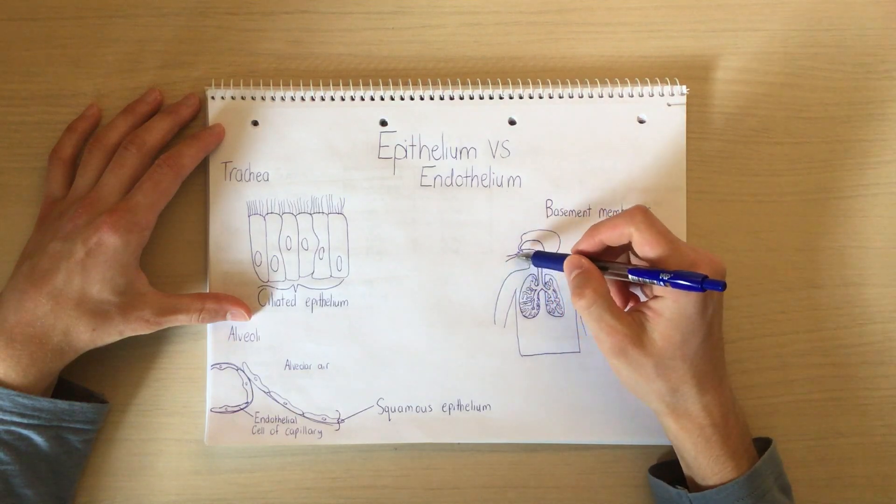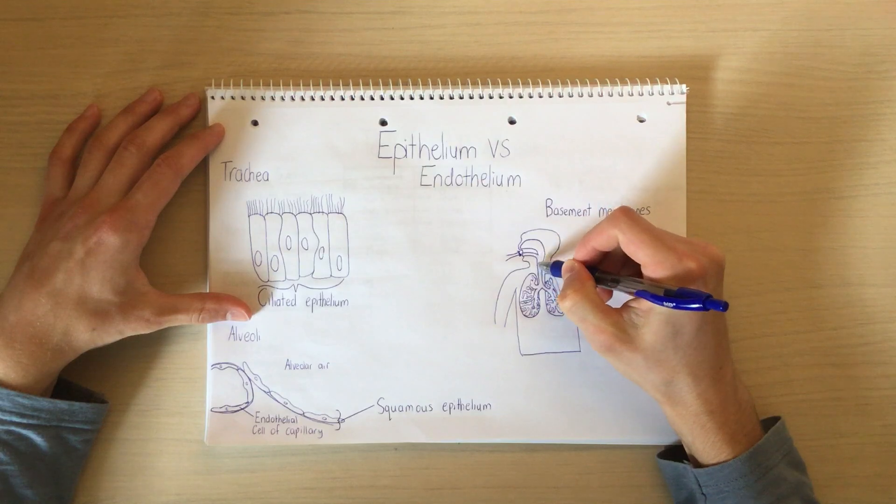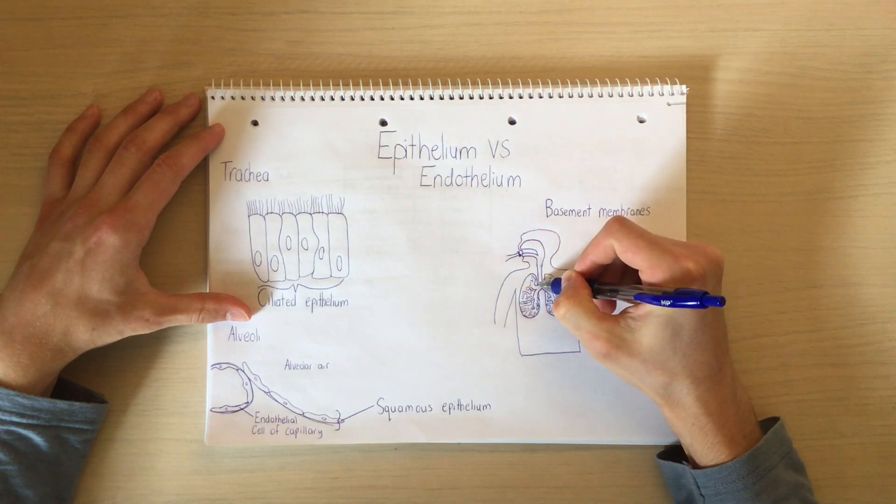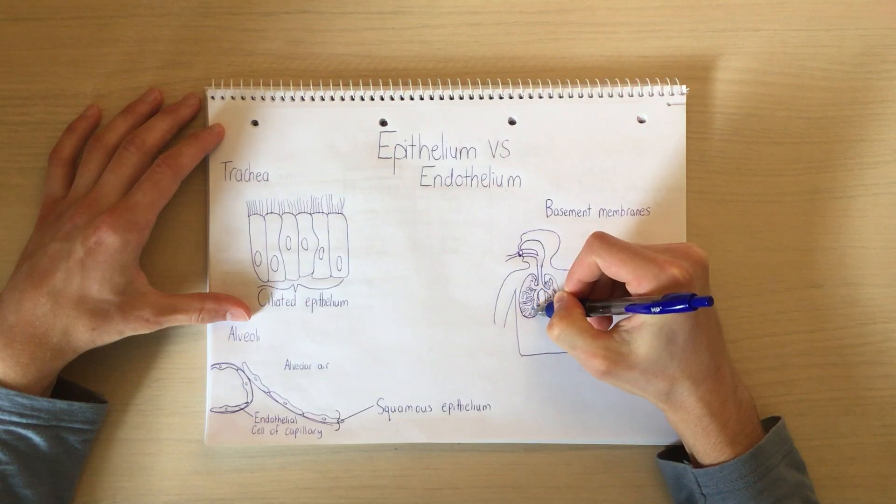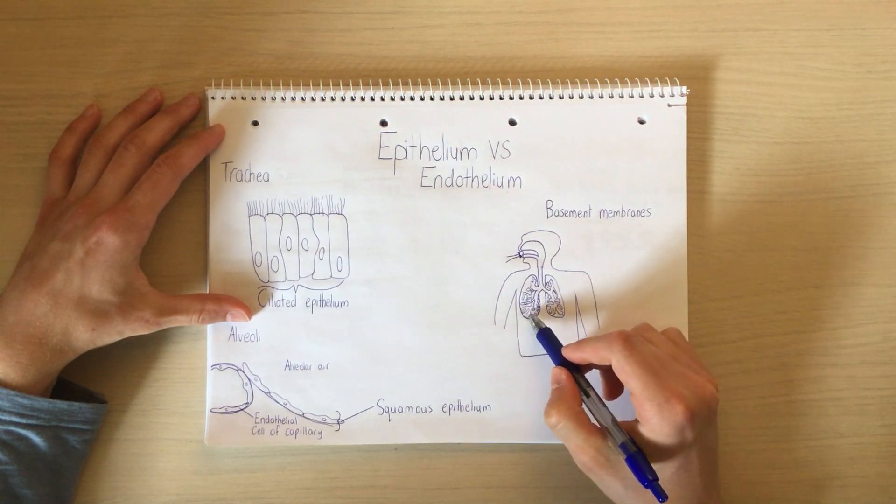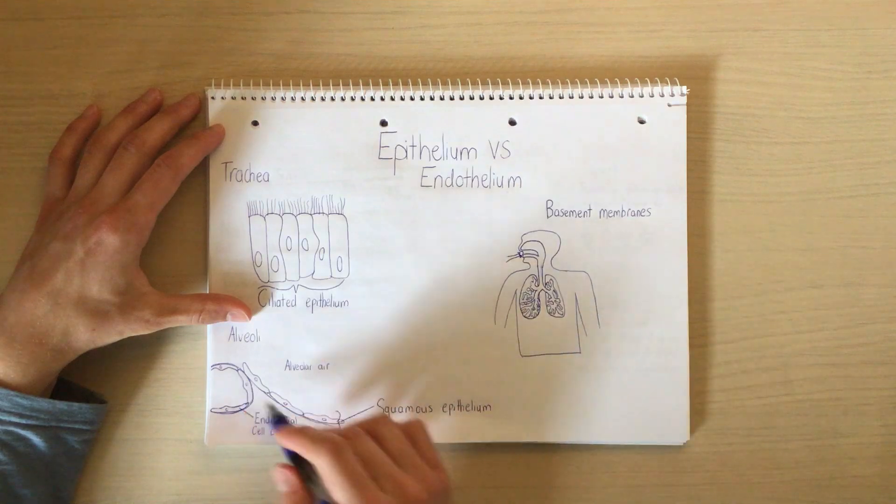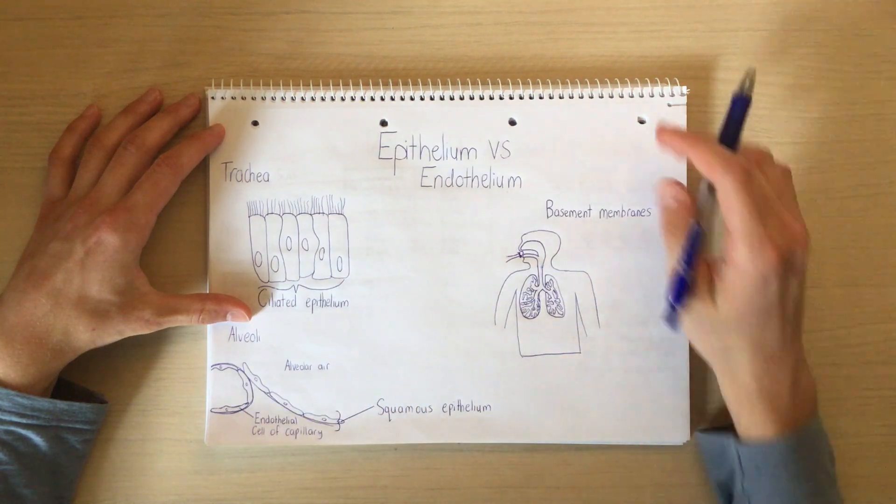If we also want to look at the alveoli, we can draw a direct line from the outside environment through the trachea, through the bronchi, through the bronchioles and to the alveoli. So the alveoli have a direct pathway to the outside world. And that is why they have squamous epithelium as the tissue that makes them up.